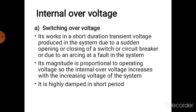Internal overvoltage is also known as switching overvoltage. Switching overvoltage is a short duration transient voltage produced in a system due to the sudden opening and closing of a circuit breaker, or due to arcing at a fault in the system. Its magnitude is proportional to the operating voltage, so internal overvoltage increases with the increasing voltage of the system.